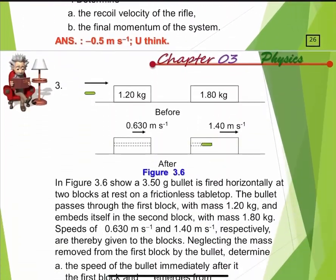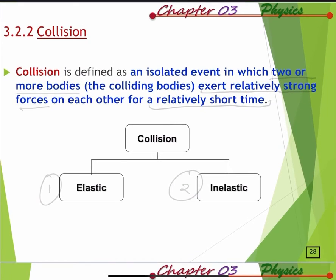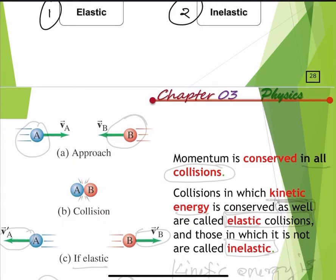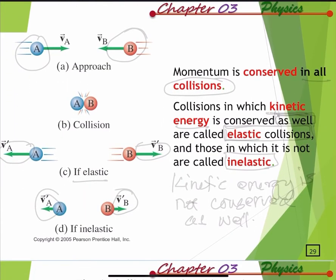Sub-topic 3.2.2 — Collision. A collision is defined as an isolated event in which two or more bodies exert relatively strong forces on each other for a relatively short time. Collisions can be divided into two types: elastic and inelastic.